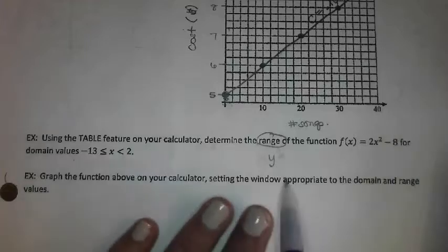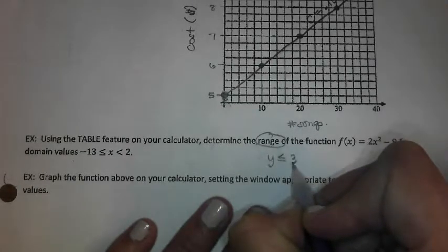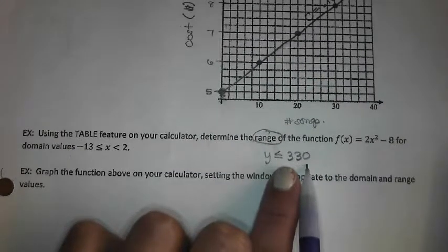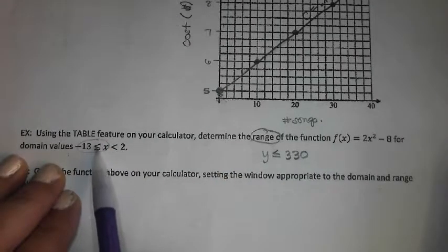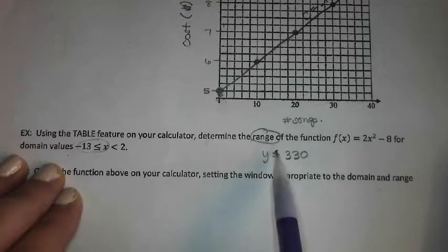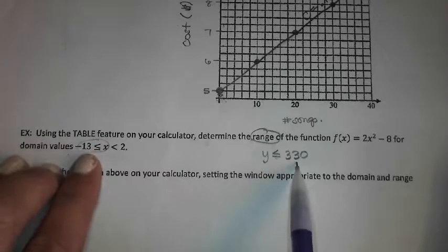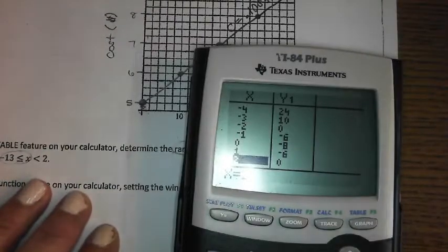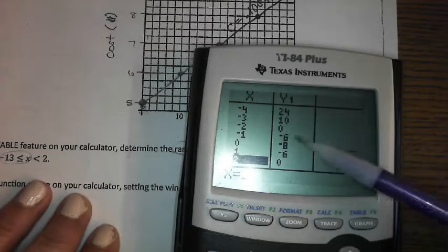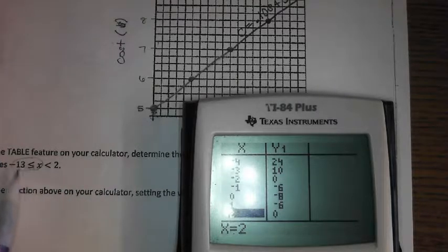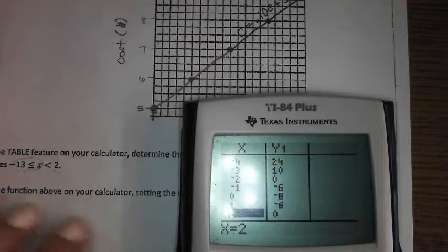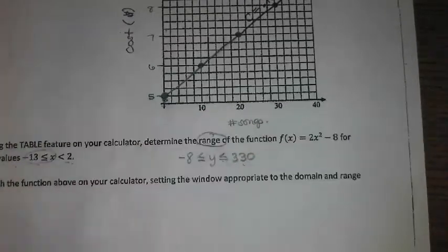The maximum was what? 330. And that was occurring at negative 13. So do you see how my domain includes negative 13? It uses less than or equal to. So we want to use that or equal to symbol on the 330 that goes along with that negative 13. And then my lowest value was what? Negative 8. Even though it ended at 0, my lowest value was negative 8. And that happened when X was 0, which is fully included in this domain. So my lowest value was negative 8 and we actually reached that.